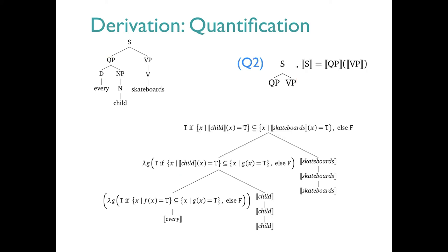Finally, we use rule Q2 to get the sentence meaning, because we match its syntactic template. The subject meaning is the functor. It applies to the VP meaning skateboards, which knocks out the lambda G, and goes in for the variable G in the body of the expression, which delivers the final meaning.